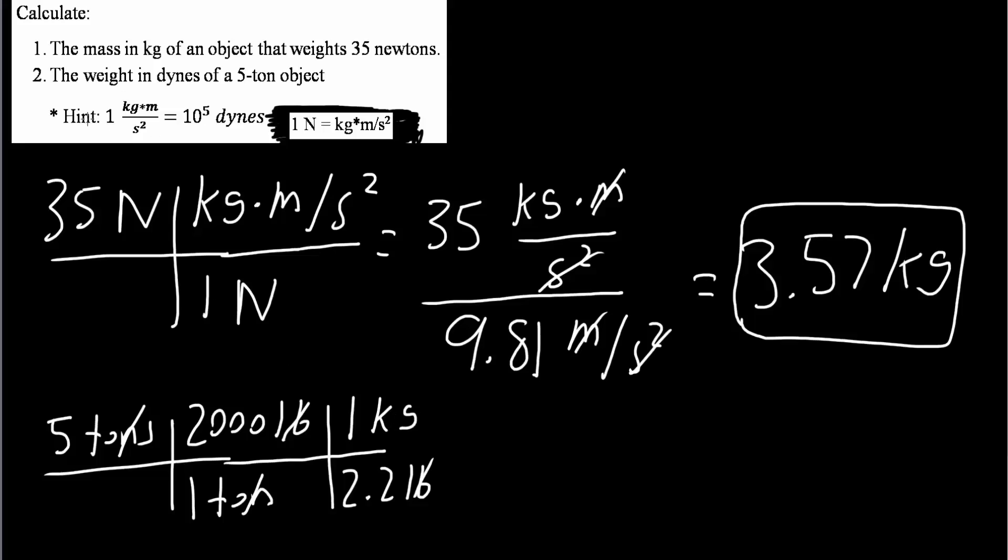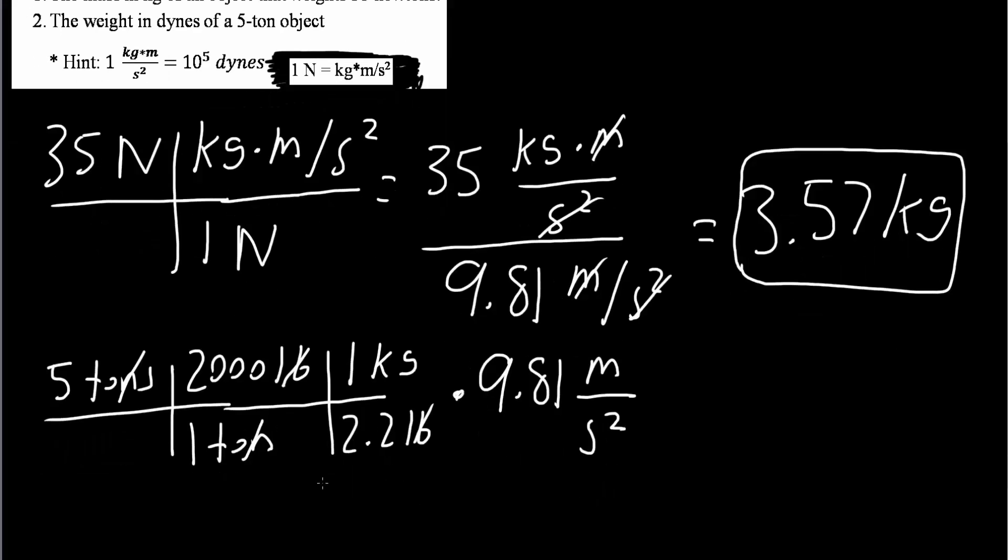And if you notice, in this hint, we're saying that kilograms times meter divided by seconds squared is equivalent to dynes. And so for this problem, we would have to multiply by gravity, which is 9.81 meters divided by seconds squared. And so if you notice,